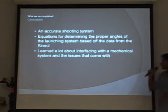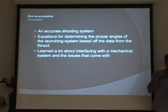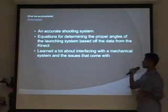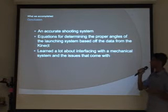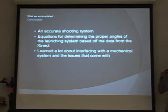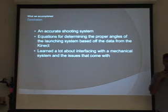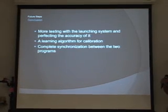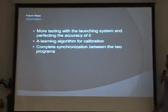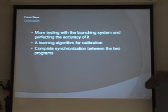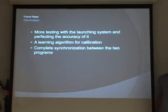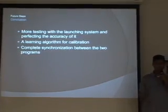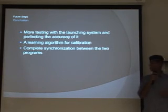In conclusion, we had a pretty accurate shooting system, though shooting into cups is difficult — being off by even an inch means hitting the side of the cup. We have equations for determining proper angles of the launching system based on Kinect distance data. We learned a lot about interfacing with the mechanical system; one primary issue is that the regulator isn't always at an exact PSI, fluctuating a few PSI up or down, which affects our shooting. Future steps include more testing with the launching system, a learning algorithm for calibration on the projectile system, and possibly improving the vision system to better track balls. Thanks to Zach and Winthrop for their help on the project.